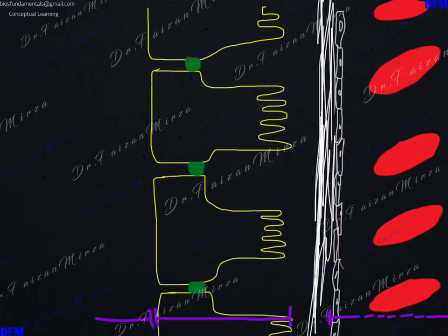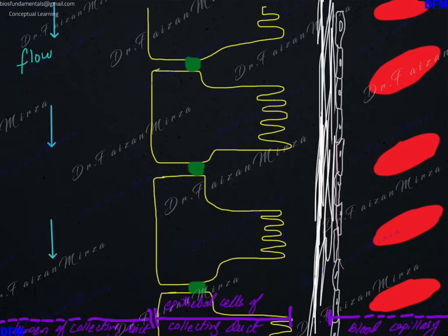This region is the blood vessel, this is the cell of your collecting duct, the epithelial cells of the collecting ducts, and this is the blood capillary, and this is the lumen along which the filtrate is traveling in the collecting duct, and the flow of filtrate is in this direction.